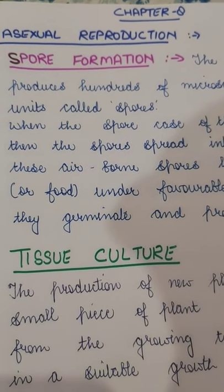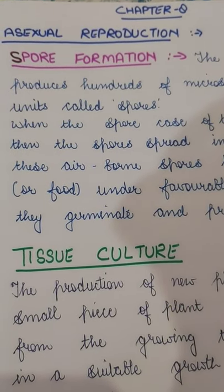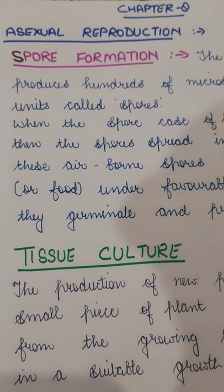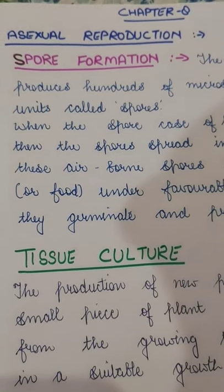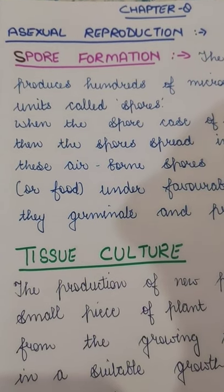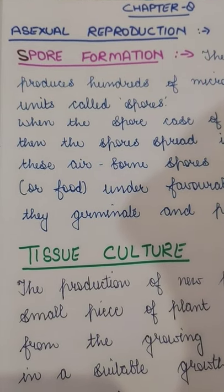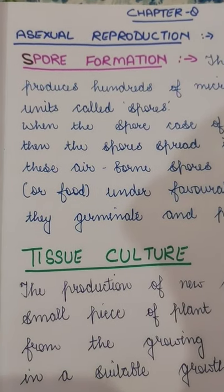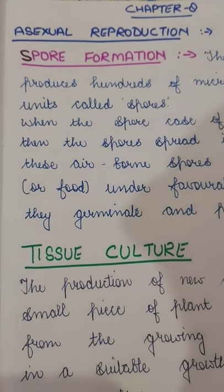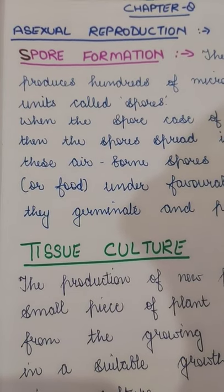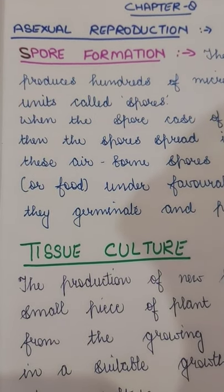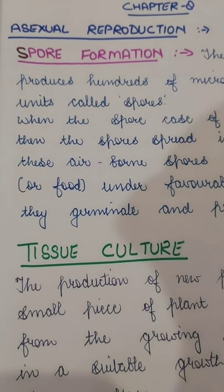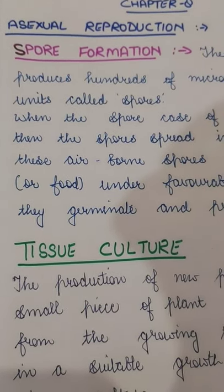Good morning to all the students, welcome back to the class. We were doing chapter number eight, 'How do Organisms Reproduce,' and we have covered a few topics already before our exam. We read about the asexual mode of reproduction — how reproduction takes place from only one parent — and there were many types like budding, fragmentation, and fission.